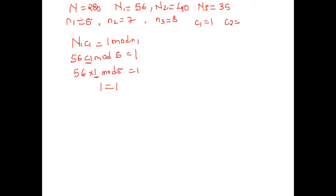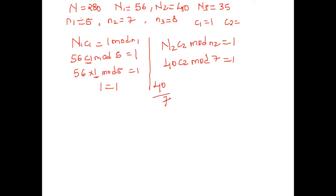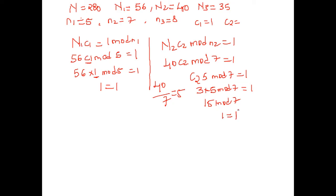Compute c2: N2 × c2 ≡ 1 mod n2, that is 40 × c2 mod 7 = 1. Take 40 divided by 7 — 7×5=35, remainder is 5. So 5 × c2 mod 7 = 1. Try c2=3: 5 × 3 = 15 and 15 mod 7 — 7×2=14, remainder is 1. So 1=1, and c2 = 3.